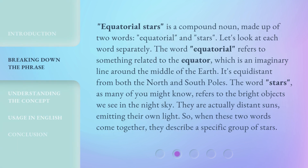Equatorial stars is a compound noun made up of two words: equatorial and stars. Let's look at each word separately. The word equatorial refers to something related to the equator, which is an imaginary line around the middle of the Earth. It's equidistant from both the North and South Poles.